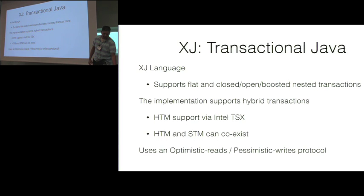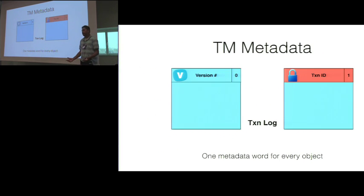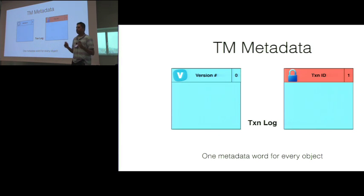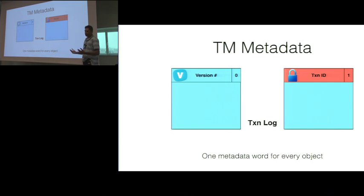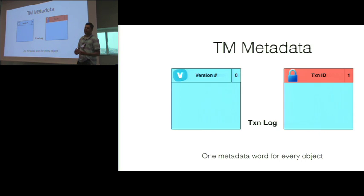As we are dealing with STM, we need to keep some metadata. We keep the metadata in a word for every object — every object has an extra word. This word tracks two pieces of information, with the least significant bit indicating the mode of operation: it either keeps the version number of the object, or in the case that somebody has locked the object, the transaction ID of the locking transaction. For tracking reads and writes, there is a transaction log to go with the STM implementation.